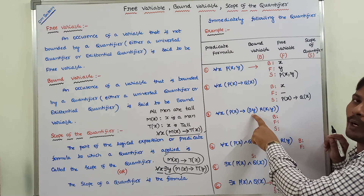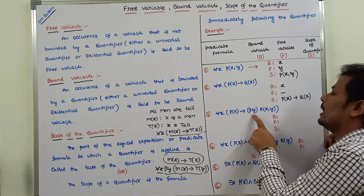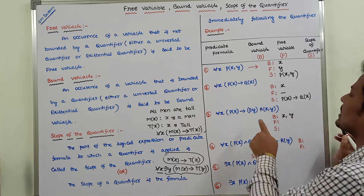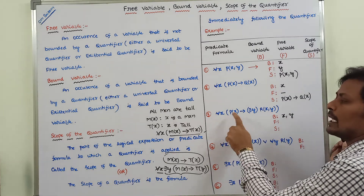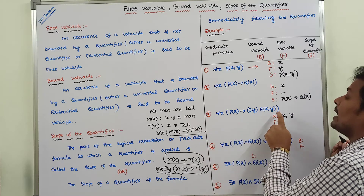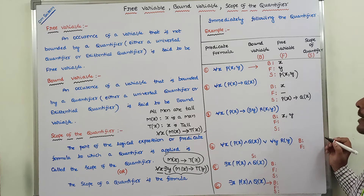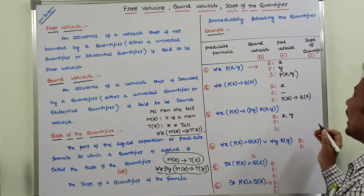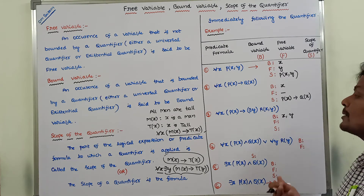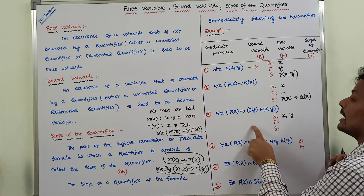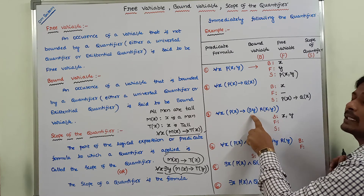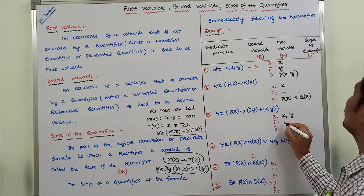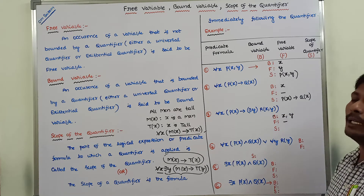So the bounded variables are x and y. X is bounded with the universal quantifier and y is bounded with the existential quantifier. There is no free variable because x is bounded with for all x, and y is bounded with there exists y.